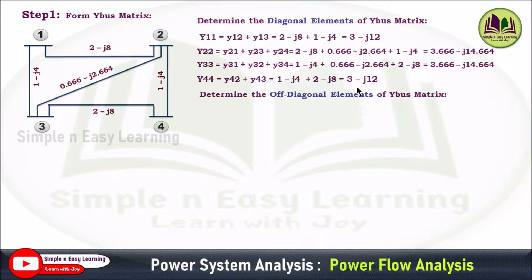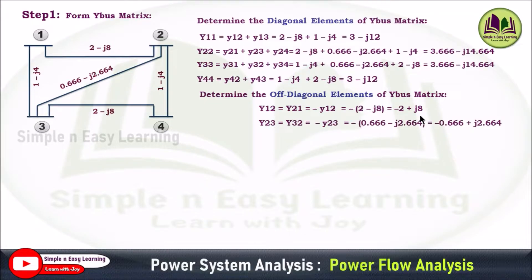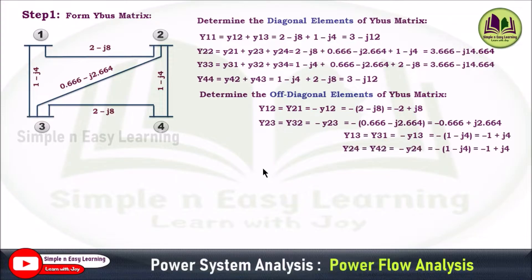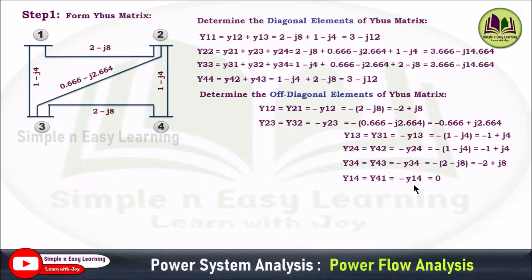Now, determine the off-diagonal elements of the Y-bus matrix. Y12 equals Y21, which equals negative of the admittance y12 — that is, the negative of the admittance connected between buses 1 and 2, giving −2+j8. Similarly, Y23 equals Y32 equals −0.666+j2.664. Y13 equals Y31 equals −y13, Y24 equals Y42 equals −y24, Y34 equals Y43 equals −y34. Y14 equals Y41 equals zero, since no line is connected between buses 1 and 4.